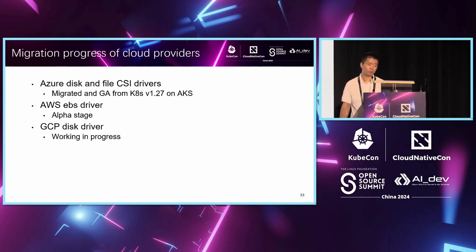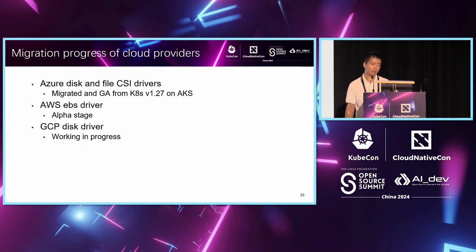Next, I will show you the migration progress of the cloud providers. For the Azure Disk and Azure Files CSI drivers, we have already migrated, and it's already available from Kubernetes 1.27 on Azure Kubernetes Service. Currently we are in the second stage, doing some optimizations as I mentioned earlier to improve the performance of the host process container on Windows. For the AWS and GCP drivers, it's still in alpha stage.